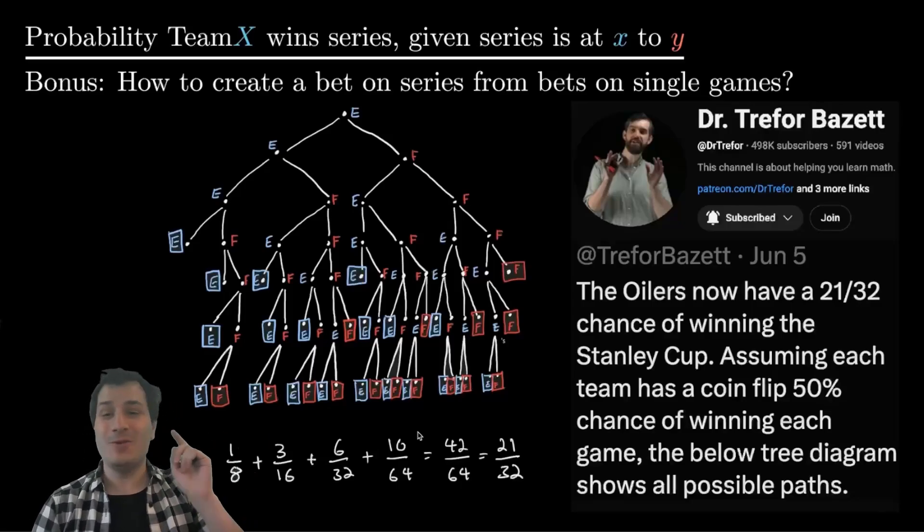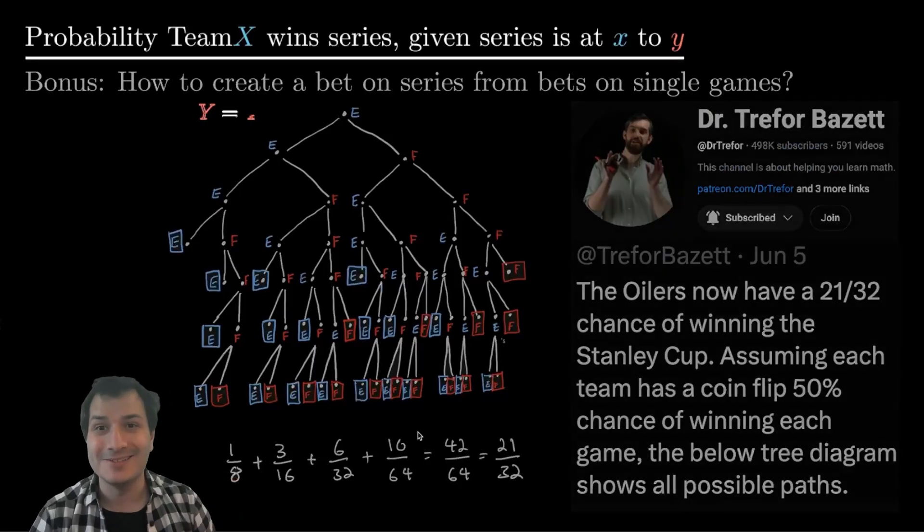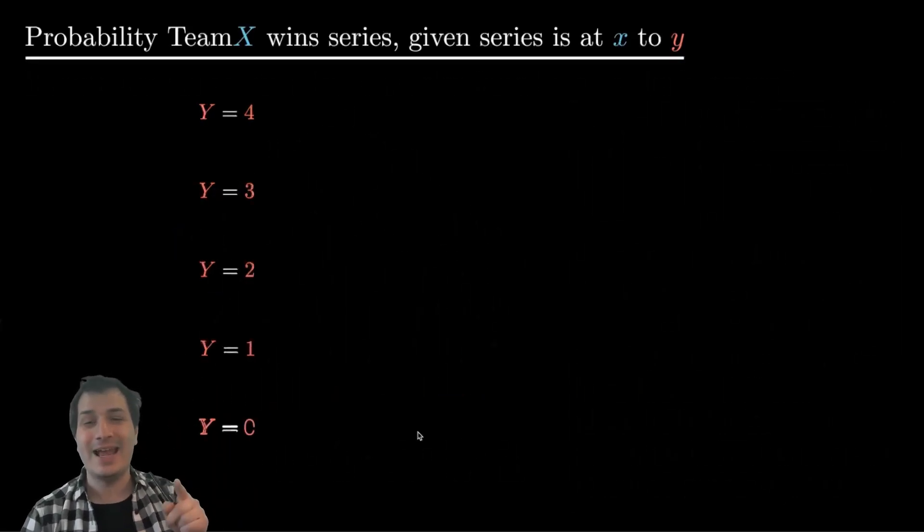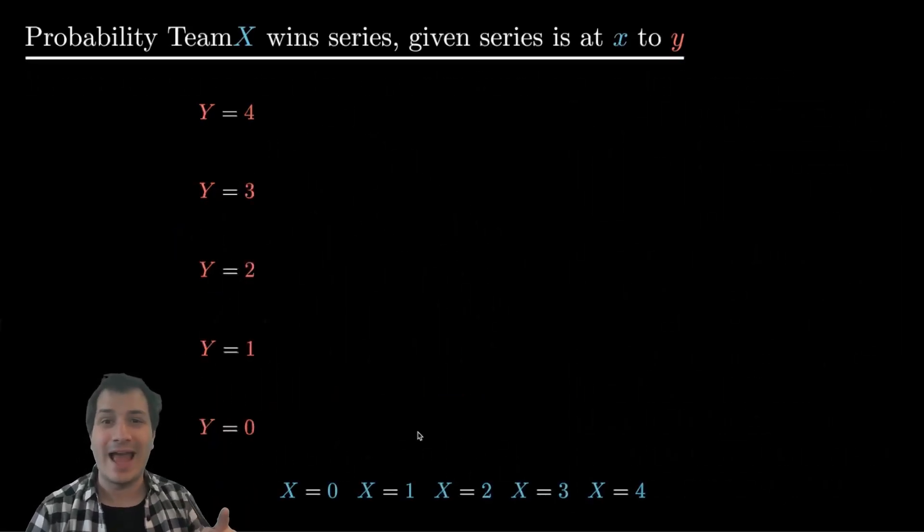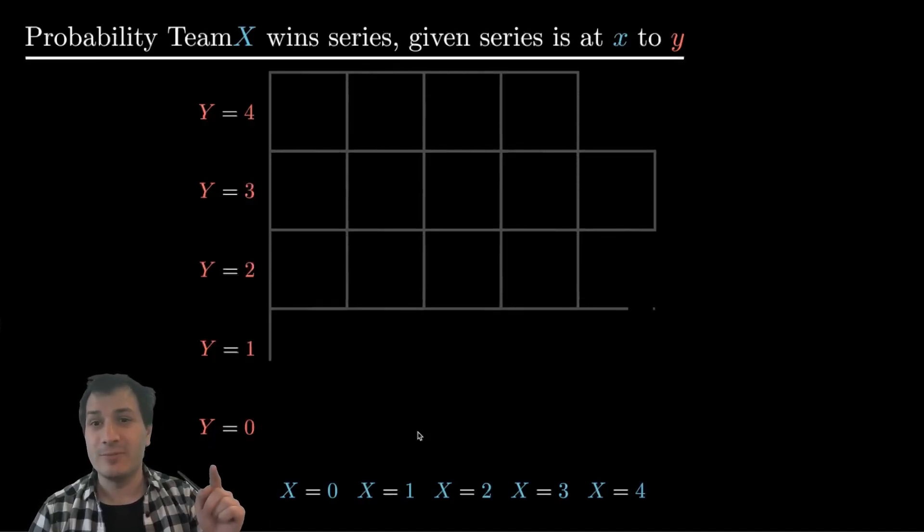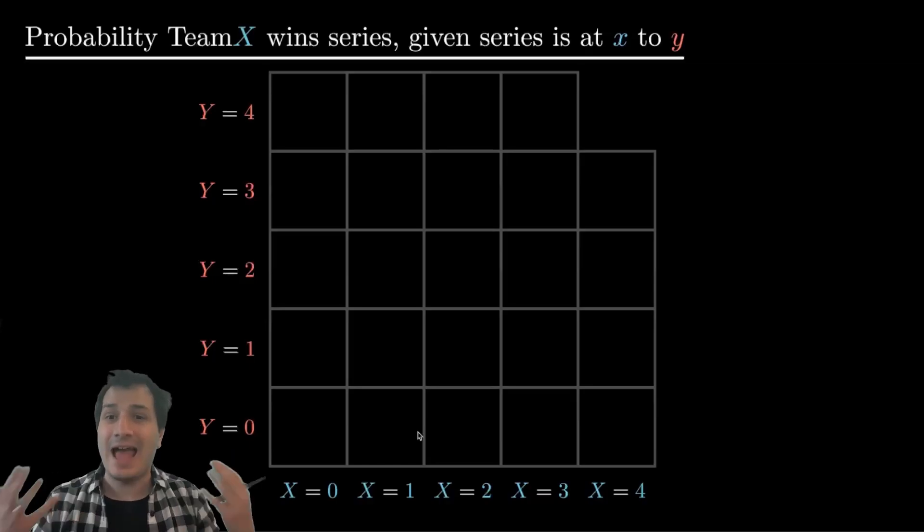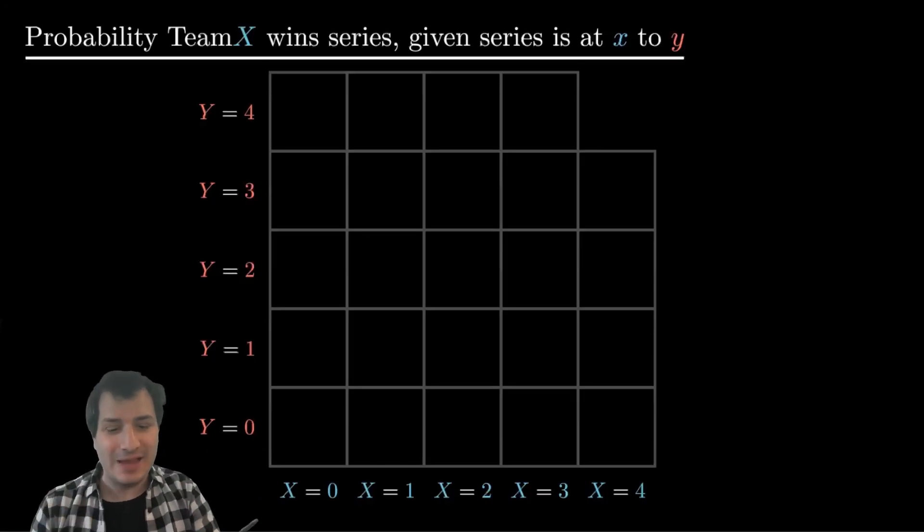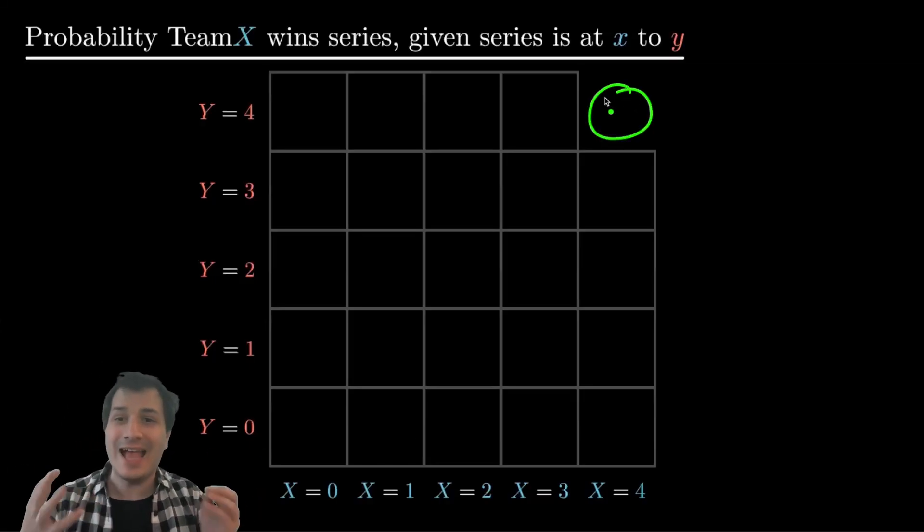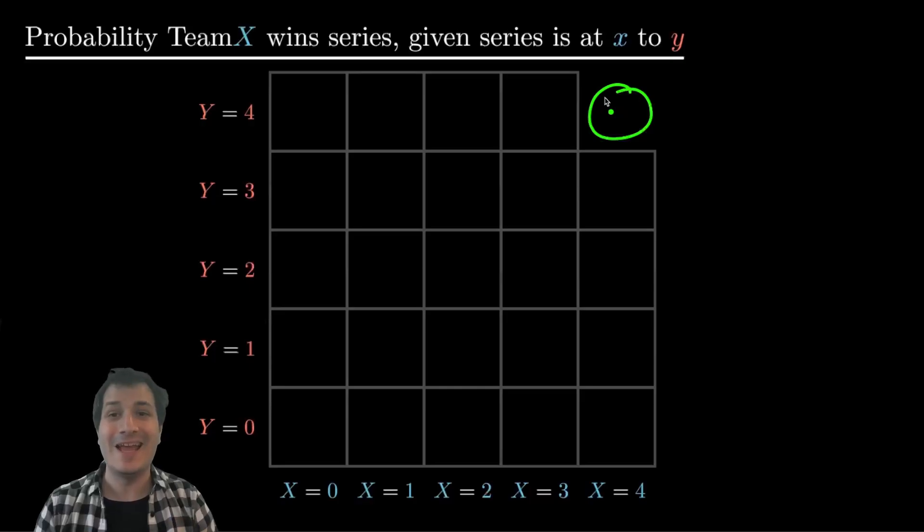So what is this method? Well, first of all, instead of drawing a tree, we're going to draw something much simpler, which is a grid. And so here is the grid, and it has all the possible values for x and y, going from zero to four for both x and for y. These are all the possible things that can happen in this series. And you'll notice I've actually left off one possibility, which is the x equals four, y equals four possibility. That one is actually impossible to get to because the series always ends before we get to that one.